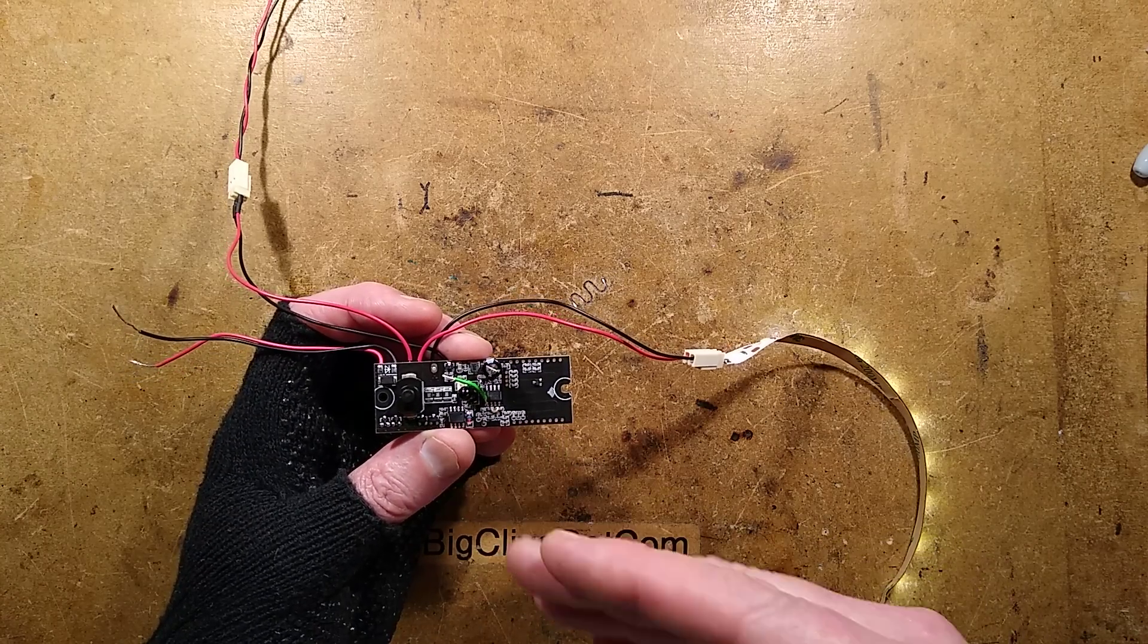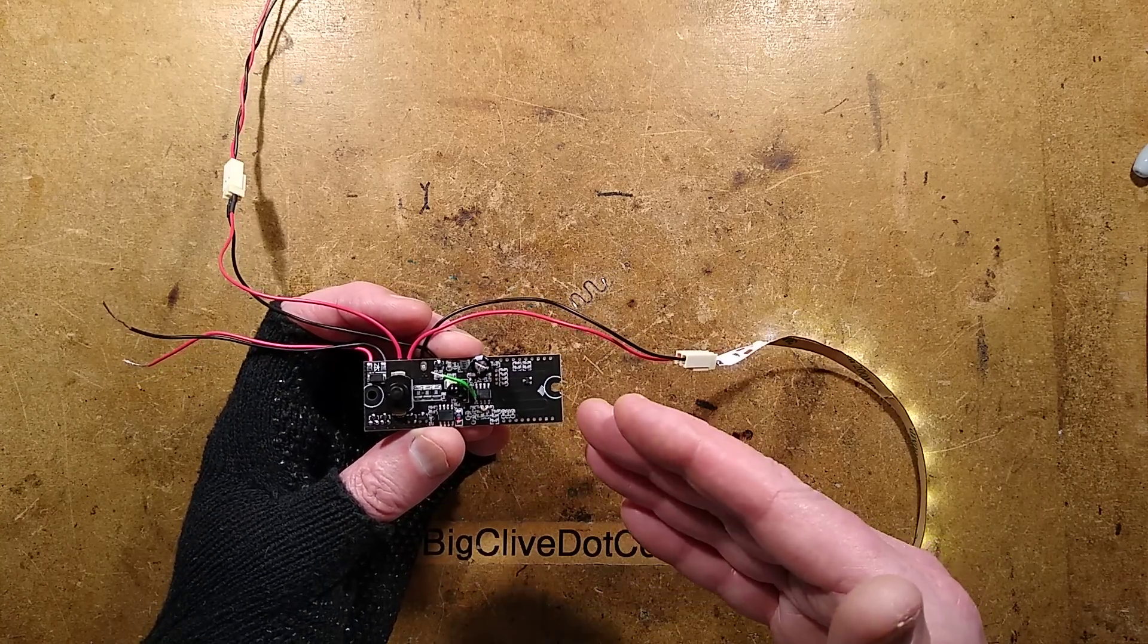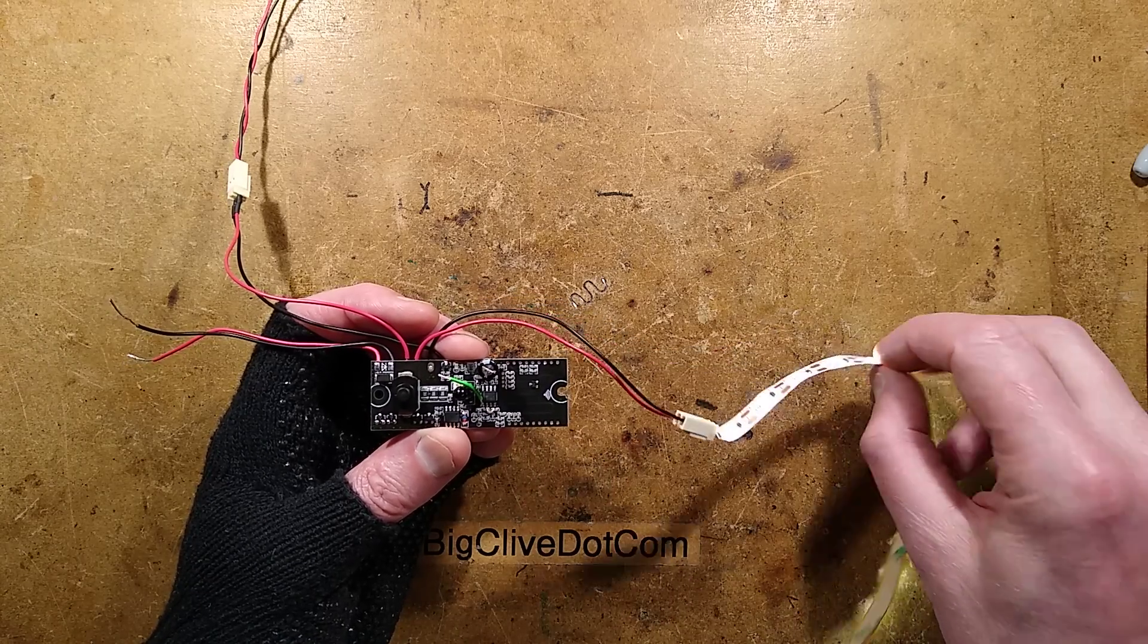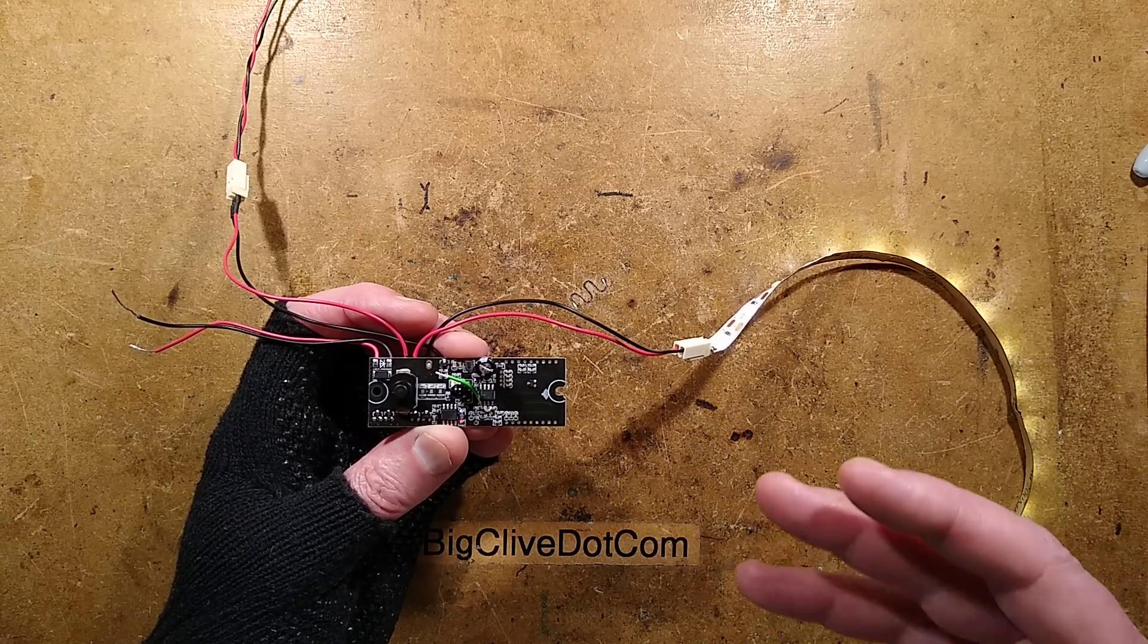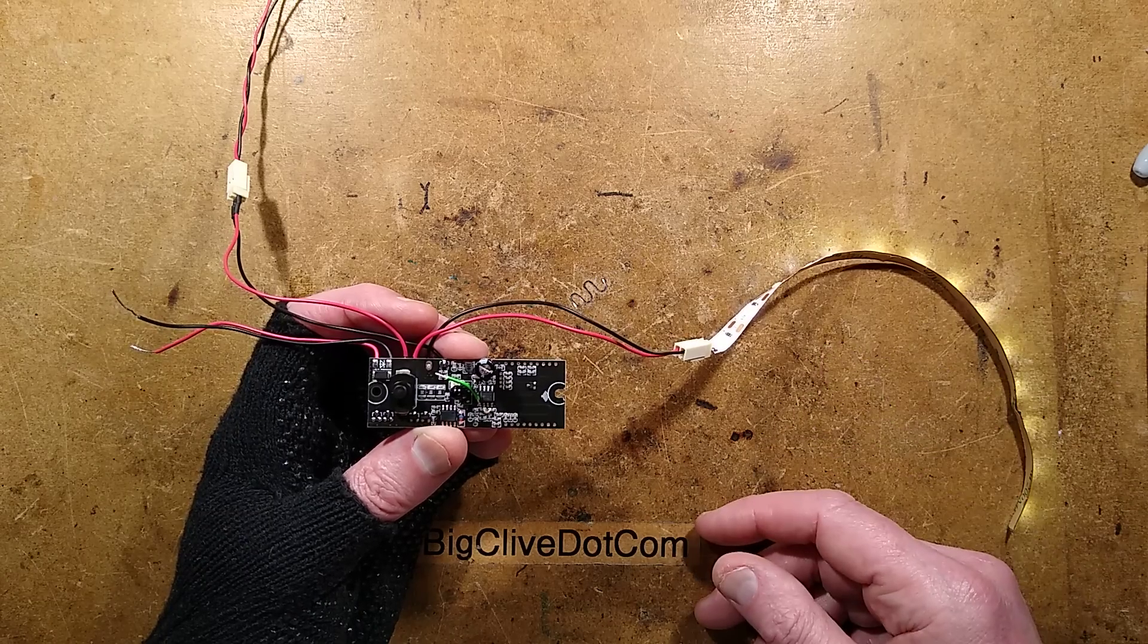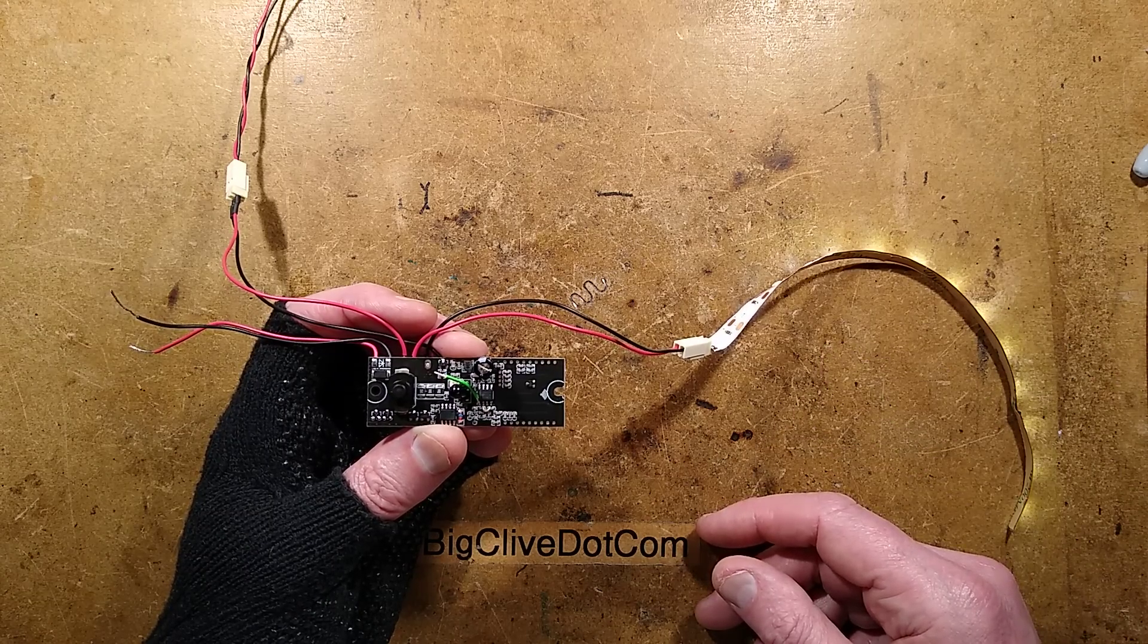It's basically a solar-powered lighting controller with a Doppler radar detector built into it. At the moment I've got some LEDs connected and it's working now. It wasn't working before and I had to get the oscilloscope and everything on it to actually work out what was wrong.